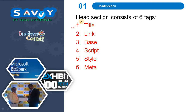The 6 tags in the head section are: title tag, link tag, base tag, script, style, and meta. We are discussing the meta tag in the next section. The first 5 tags are discussed in this section.